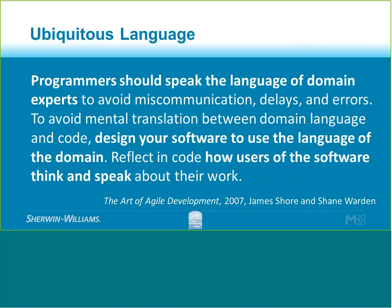Fowler gives us another definition. He says it's a common, rigorous language between developers and users. We need our language to be common so we can have clear communication, and we need our language to be rigorous because code does not deal well with ambiguity. We'd like to have a language that we can share and that can be reflected everywhere — in the user interface, in the documentation, in the code itself, in your methods, variables, classes, and verbal conversations.